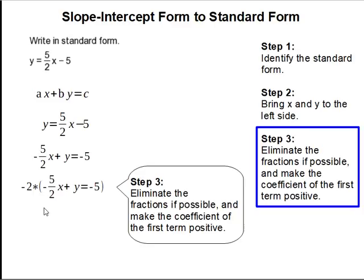To eliminate the fraction, we're going to multiply each term by 2, and to make the first term coefficient positive, we're going to multiply by negative 2. So negative 2 times negative 5 over 2x gets us 5x. Negative 2 times y gets us negative 2y. Negative 2 times negative 5 gets us positive 10. And our standard form is 5x minus 2y equals 10.